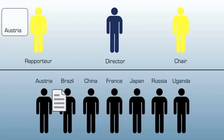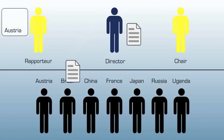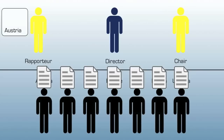We are now back in formal session. During the unmoderated caucus, two working papers were produced, which are now being sent to the director. The director will check them for style and grammar and send them back if they are insufficient. Should they meet the requirements, the director may approve of them. Luckily, one of the working papers has found the approval of the director. It is now being introduced as working paper 1.1 and distributed to all participants.